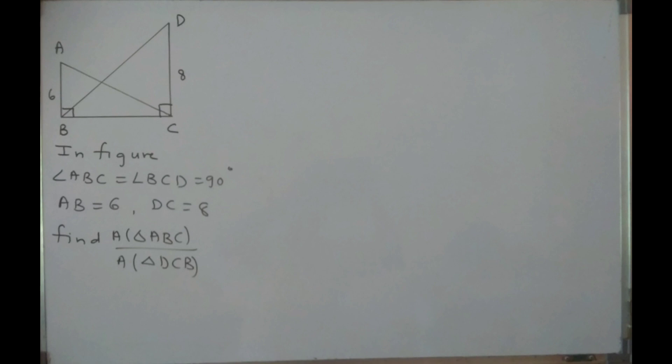In triangle ABC and triangle BCD, angle ABC is equal to angle BCD is equal to 90 degrees. AB is given as 6 and DC is given as 8. You are asked to find area of triangle ABC upon area of triangle DCB. If I consider triangle ABC, BC is the base and AB is the height. If I consider triangle DCB, BC is the base and DC is the height. So both triangles have a common base — it means bases are equal.